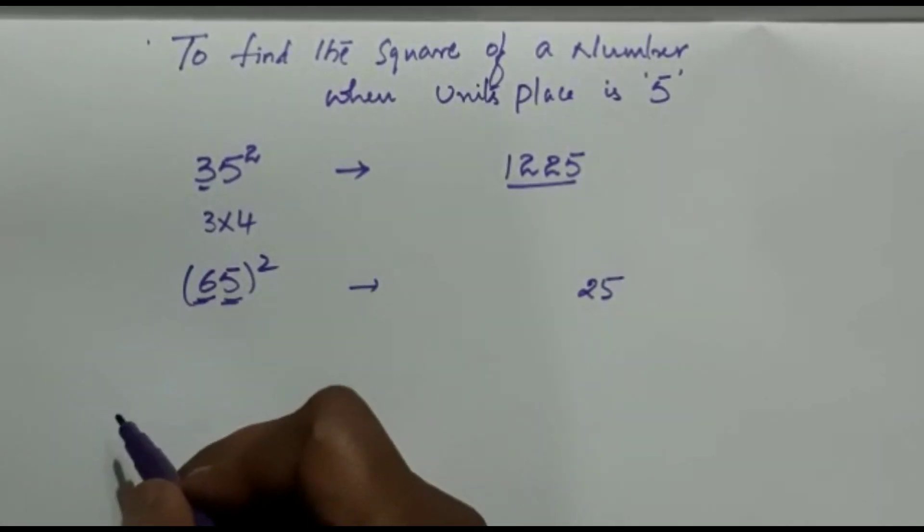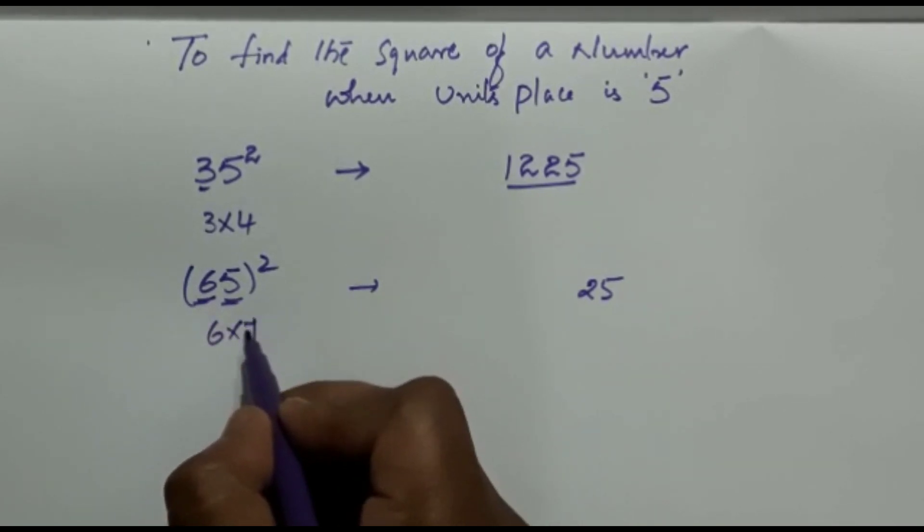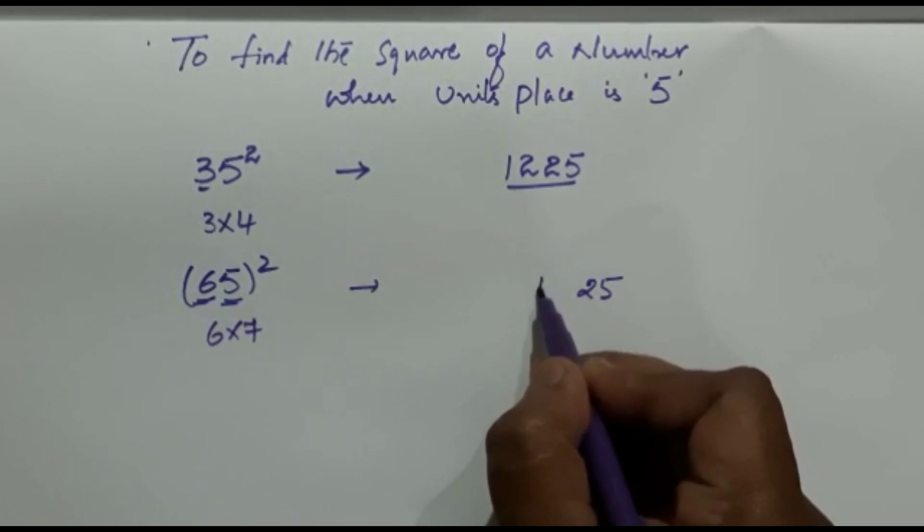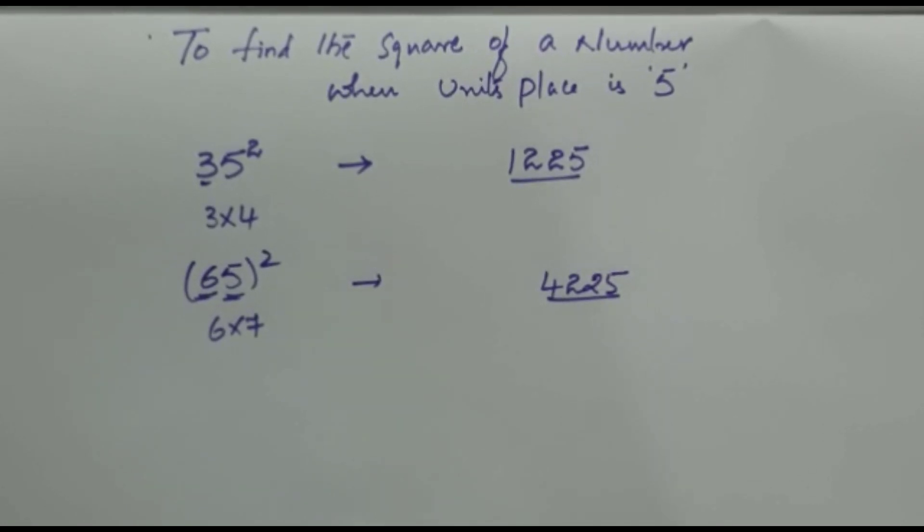And here 6 is there and the next number will be 7. Therefore we have to multiply 6 with 7. Then the resultant is 42. So the answer is 4225. So 65 squared is equal to 4225.